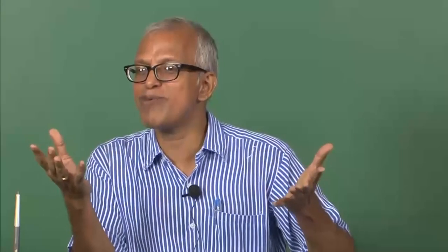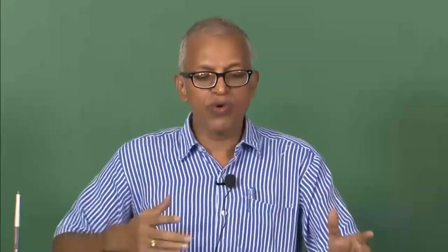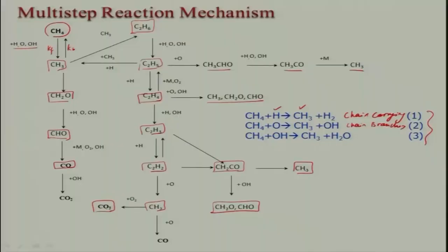What I am trying to show you is that in this multi-step reaction mechanism, anything and everything can occur. It is not that this is exactly what is occurring in nature — this is the model what people have devised. What exactly is happening, God only knows, or maybe in future some of you will propose a better model. This will contain something around 28 species and maybe 200-odd reactions or more. If you want to look at that, you can refer to the book 'Chemistry of Combustion' by Gardiner.